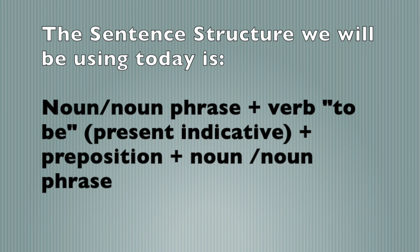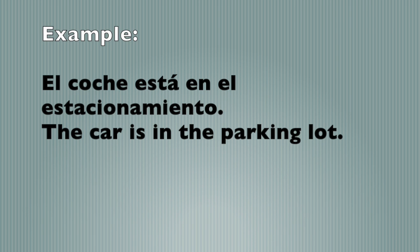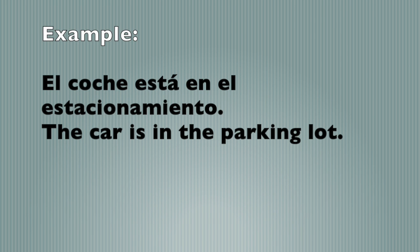Our sentence structure for today is going to be a noun or noun phrase plus the verb to be — in this case the verb estar, because we are talking about location — in its present indicative form, plus the preposition, plus another noun or noun phrase. Por ejemplo, el coche está en el estacionamiento — the car is in the parking lot.